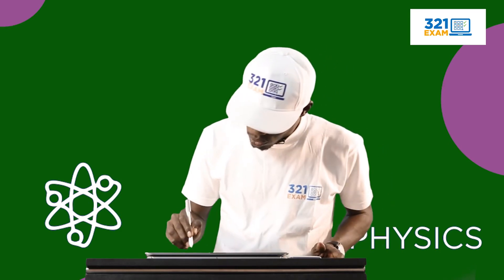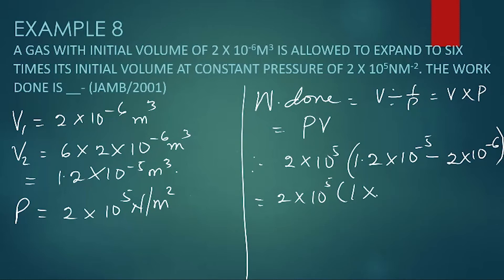And that gives you 1 times 10 raised to the power of minus 5. And at the end of the day, if you multiply it by 2 exponent 5, the answer you arrive at is 2 joules.